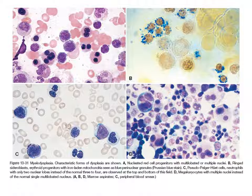Picture B — top right — shows ring sideroblasts. Erythroid progenitors with iron-laden mitochondria are seen as blue perinuclear granules after iron staining — Prussian blue stain or iron staining. These are the ring sideroblasts — this is the nucleus of the erythroid precursor, and around this nucleus these blue spots are actually iron particles in mitochondria around the nucleus. These iron particles form a ring around the nucleus, so these are known as ring sideroblasts. We will see this only after iron staining, not in normal Giemsa staining.